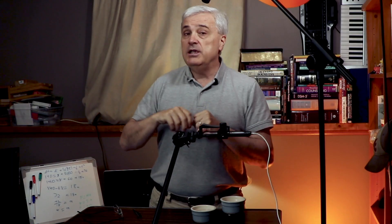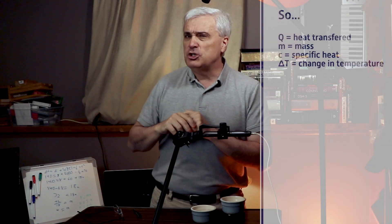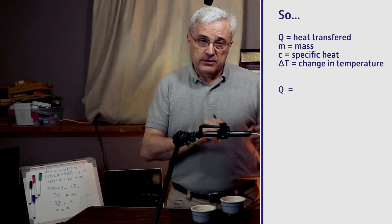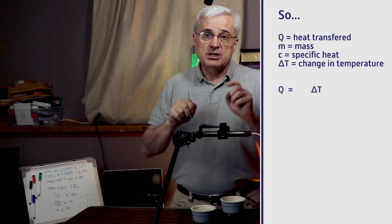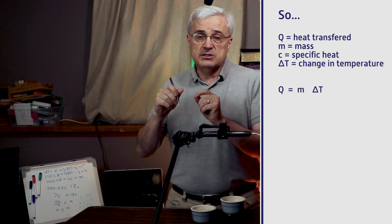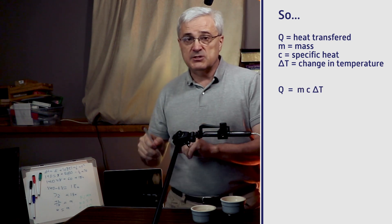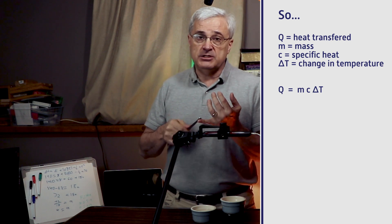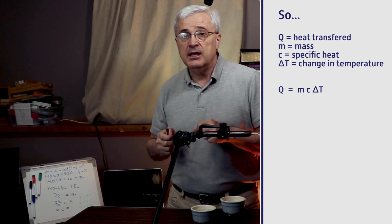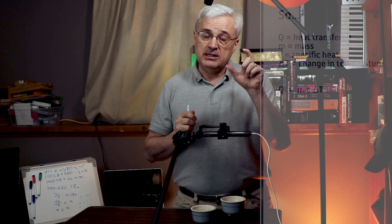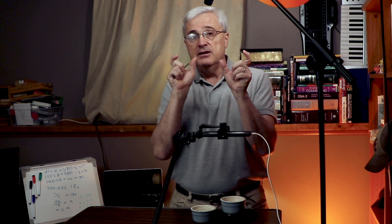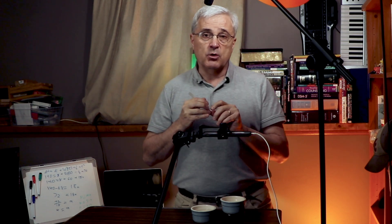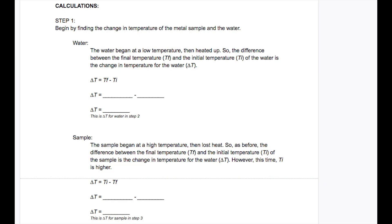In an equation, we use the variable Q to stand for heat energy. So Q equals the temperature change times the mass times the specific heat — just three numbers multiplied together. Delta T is the change in temperature. We find delta T by taking the final temperature and subtracting the initial temperature. There's space to work that out on the lab worksheet.